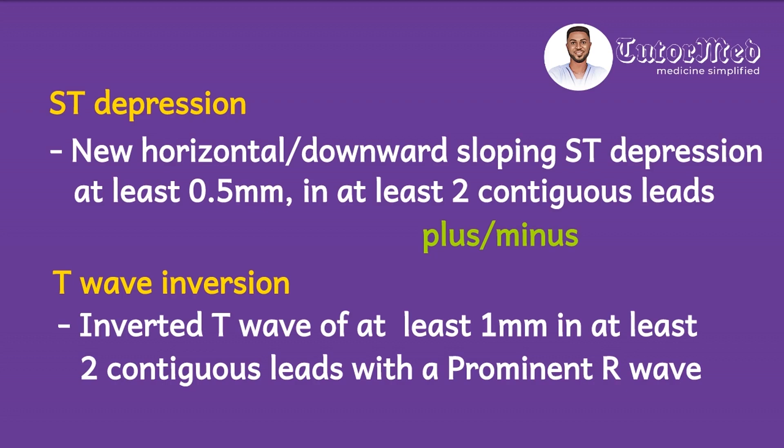The R-to-S ratio should be more than one. This criteria presupposes that the main indicator of an ongoing subendocardial ischemia is ST segment depression. In fact, an inverted symmetric T wave suggests that the ischemia has already occurred, but is not acute.